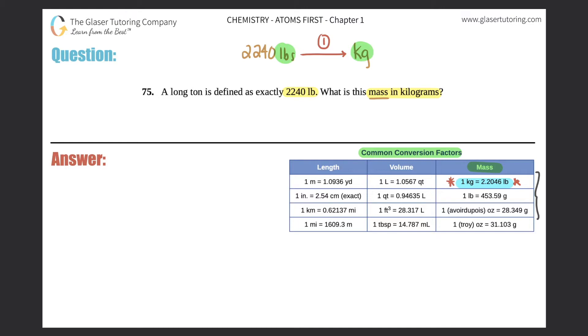I'm going to start with what I'm given, which is 2,240 pounds. With conversions, remember you're always multiplying by a ratio, and you put the unit that you don't want on the opposite side. You don't want pounds anymore, so that goes on the bottom, and you want kilograms.